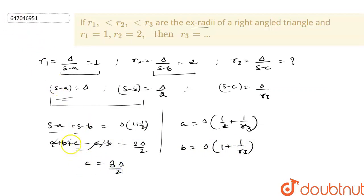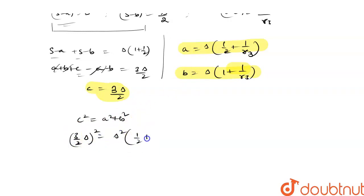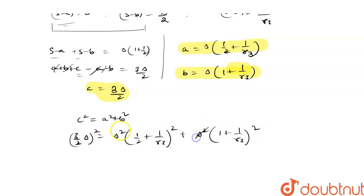These three values are substituted. We have s-a, s-b values accordingly. Now, for a right-angle triangle ABC, since R3 is the largest, the corresponding angle C is the largest, so C is the right angle. Applying c² = a² + b²: (3/2 · delta)² equals delta² · (1/R2 + 1/R3)² plus delta² · (1 + 1/R3)².